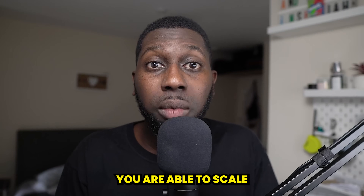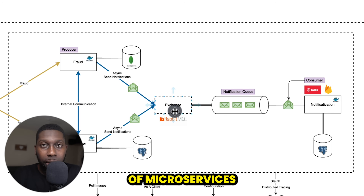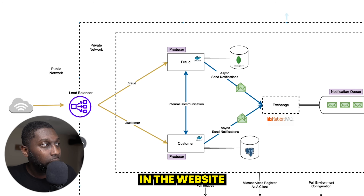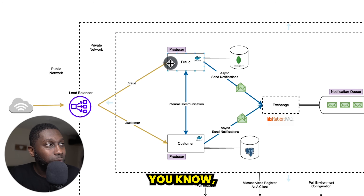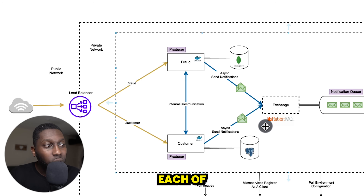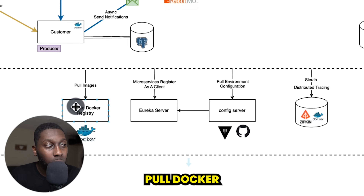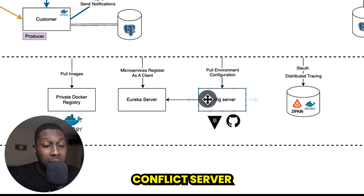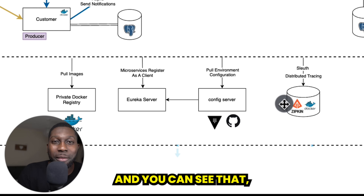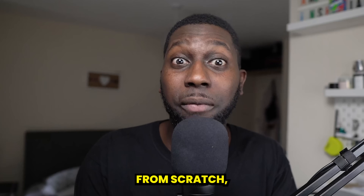In most cases you are able to scale with this approach. Looking at this diagram — this is part of my microservices course on the website — you can see there are multiple microservices. When they want to talk to each other there's a message queue, each microservice has its own database, they pull Docker images from a registry, there's a config server for configuration and tracing. You can see this is quite intense.